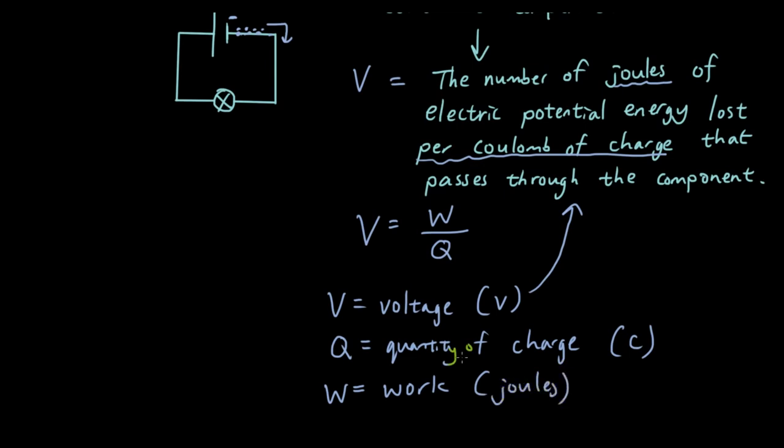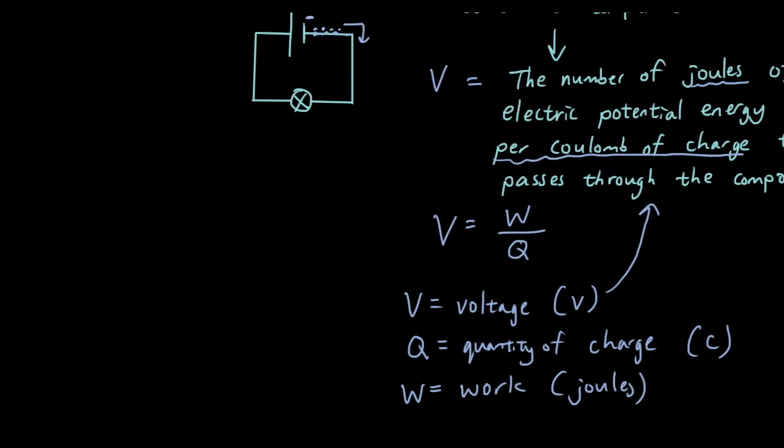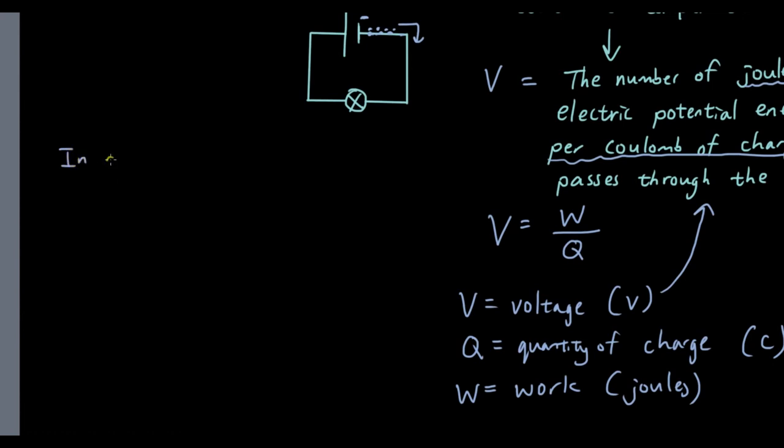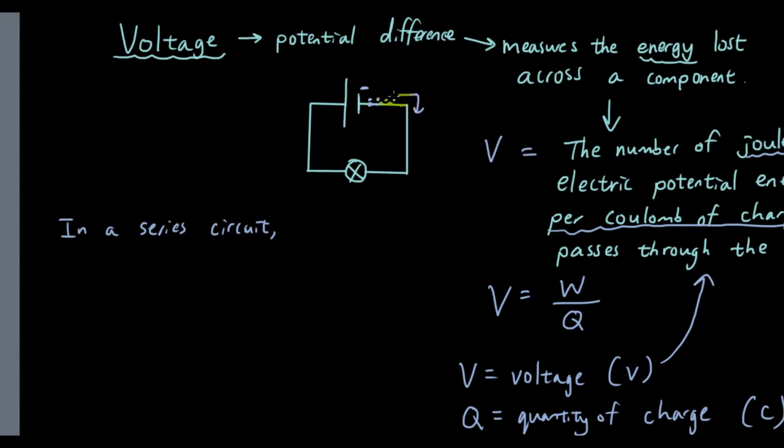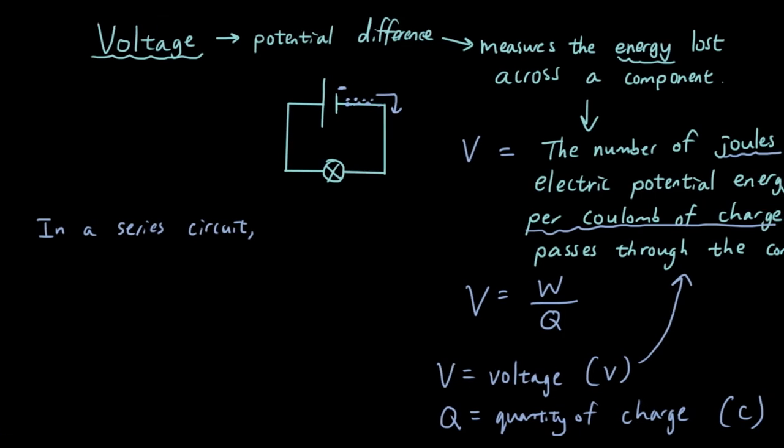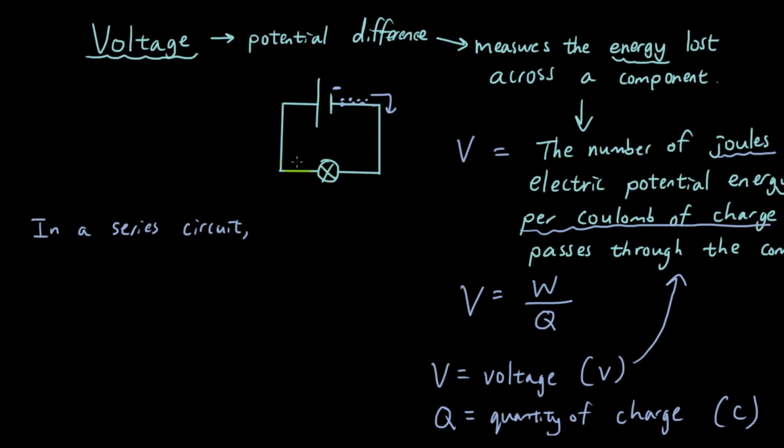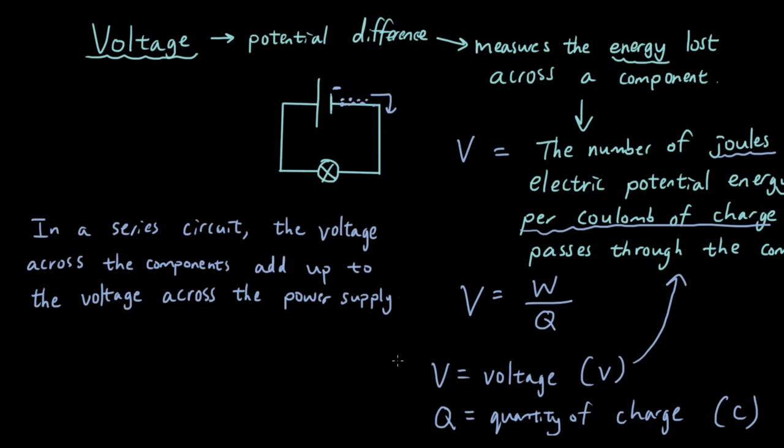So another concept that you also need to understand is that in a series circuit, a series circuit which is a circuit like this one where the current can only go in one path from the beginning in a loop to the end. We will go through parallel circuits later on, but in this kind of circuit, in a series circuit, the voltage across the components add up to the voltage across the power supply.